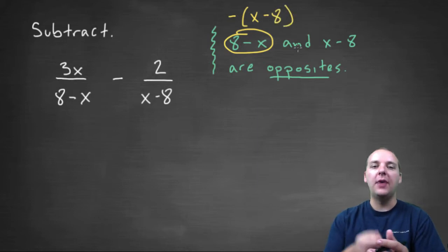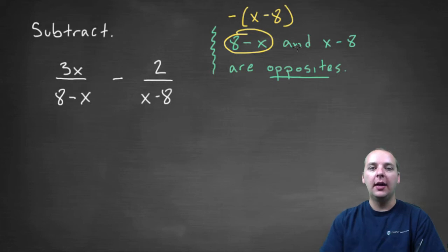In other words, what you're doing is you're factoring out a negative out of these two terms, and then what happens is the order reverses.